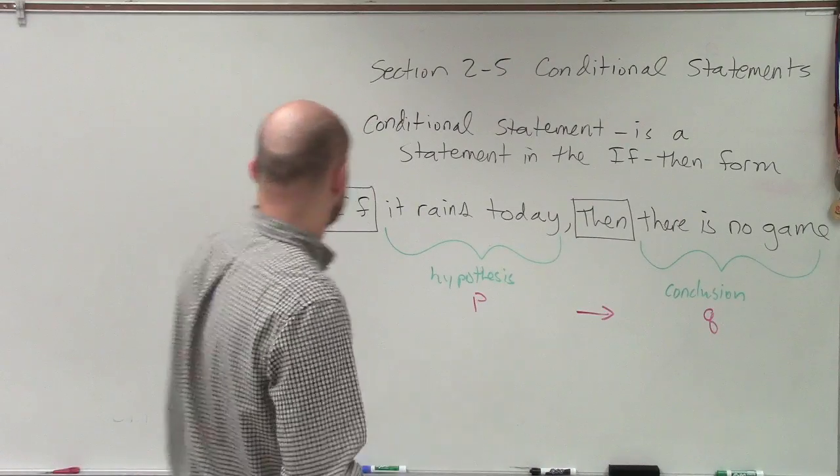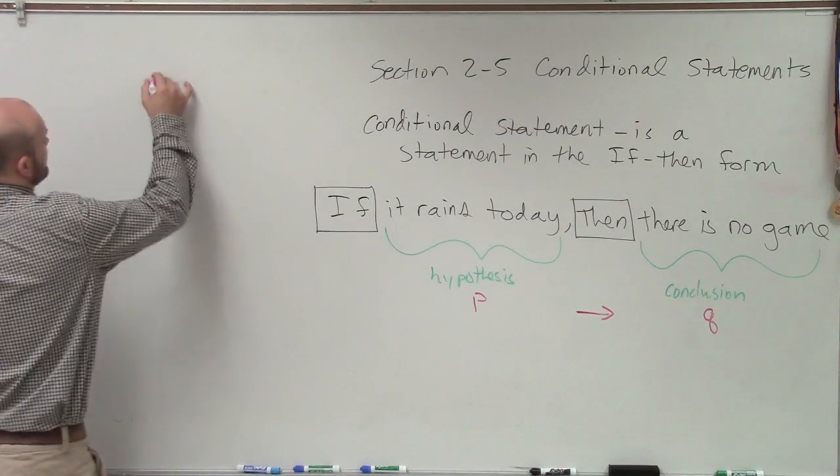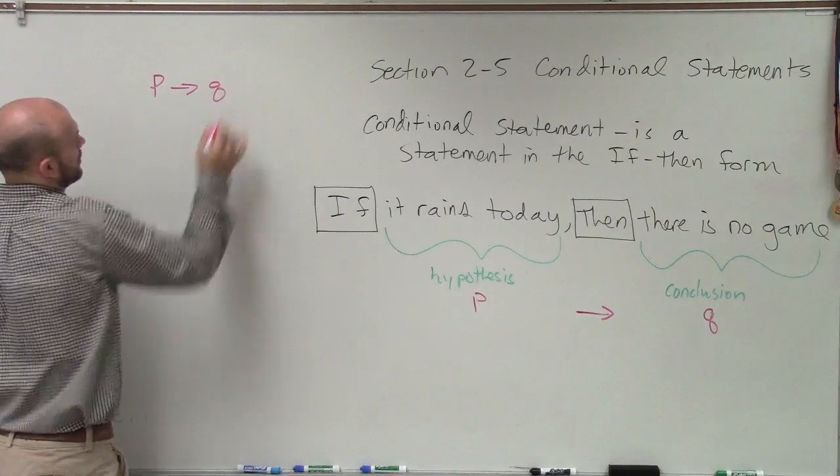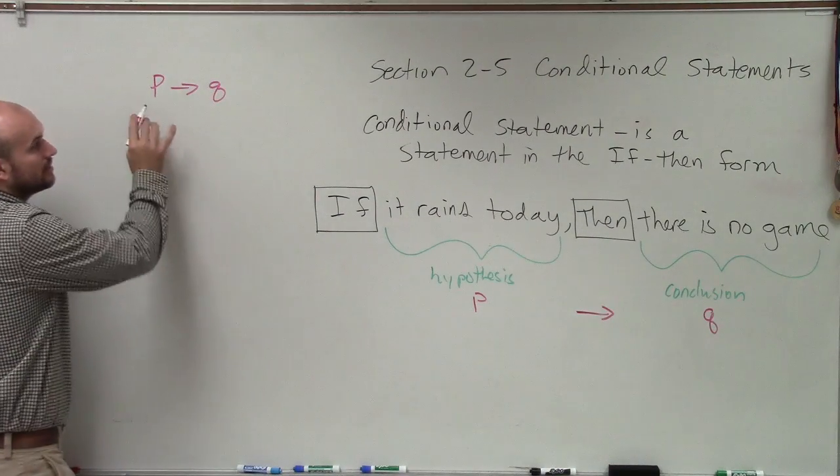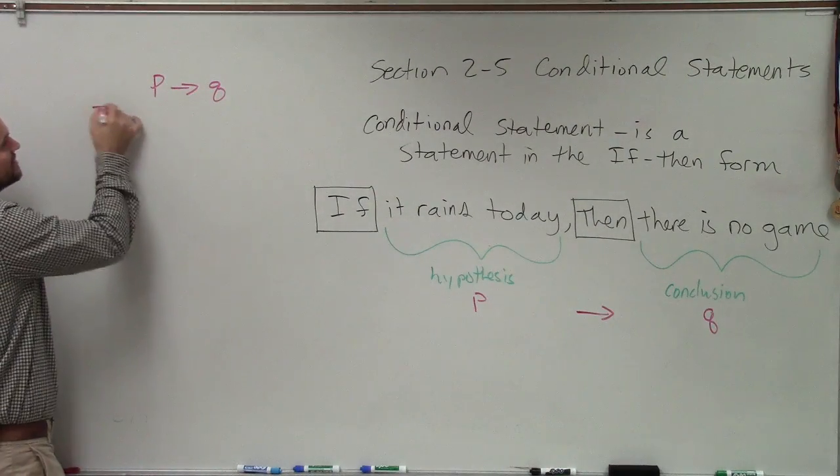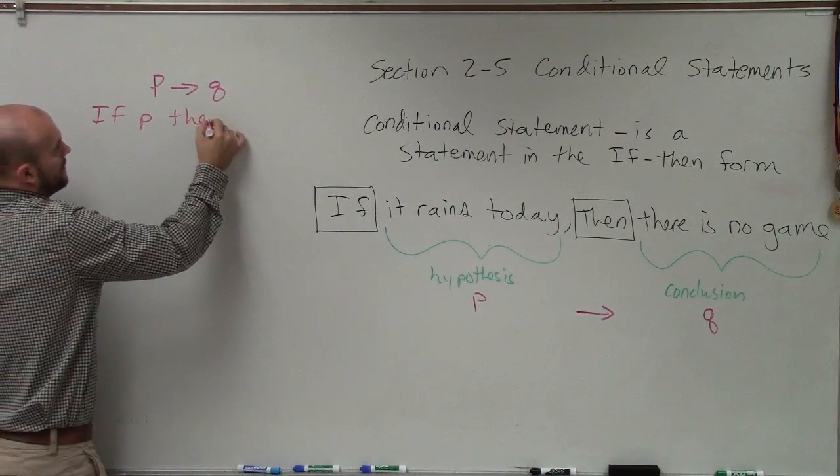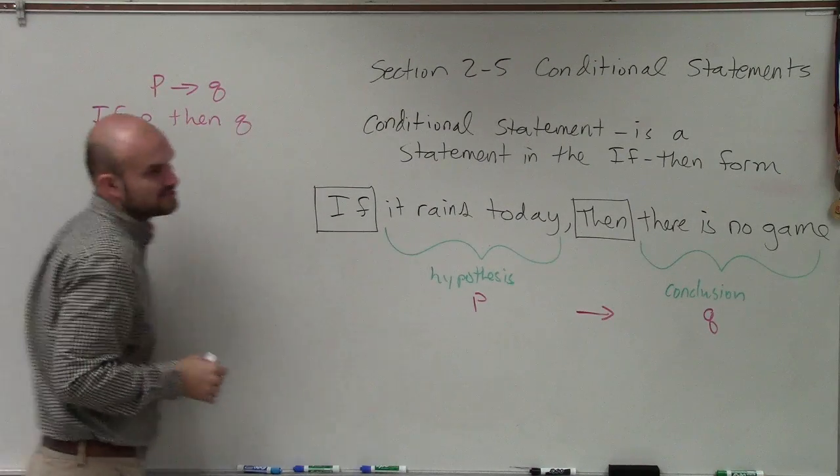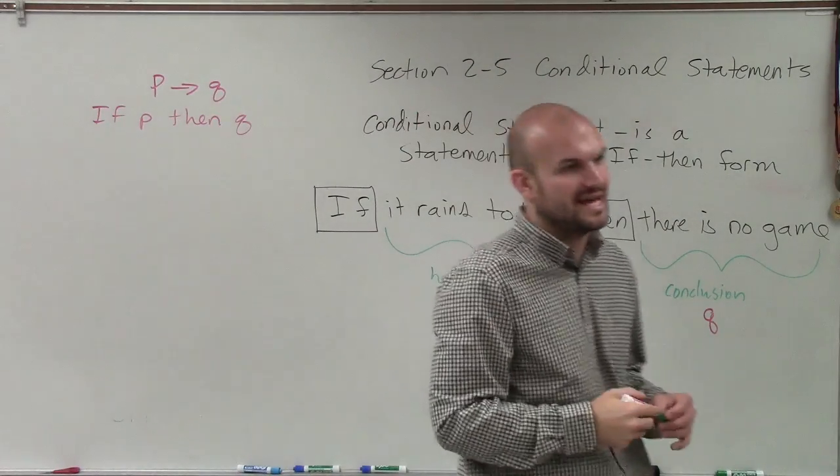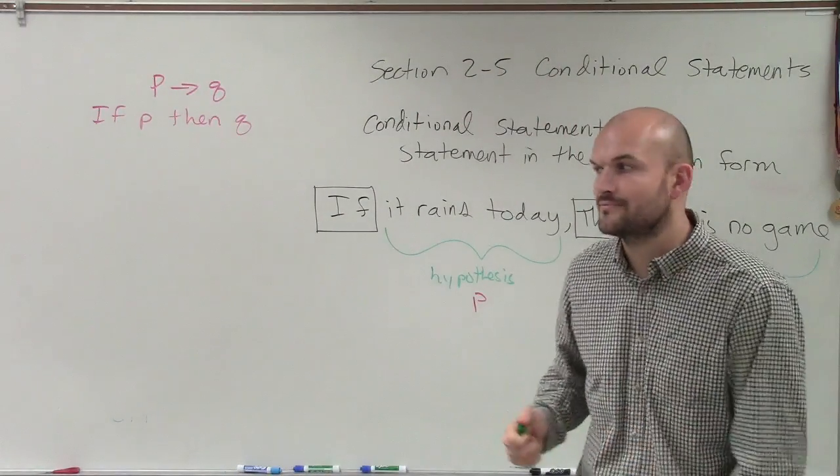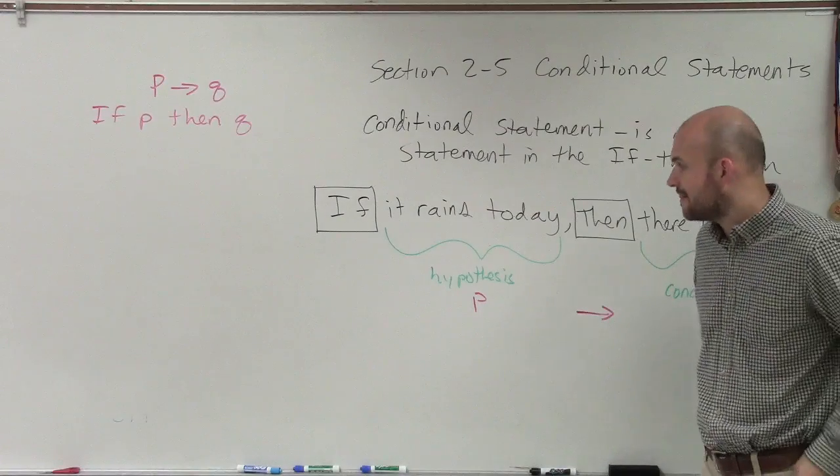I know this looks really confusing. You're like, what? P, Q? And what this stands right now, P arrow Q, is if P, then Q. That's what that stands. So if you guys see that, that's what that's going to represent. If P, then Q.